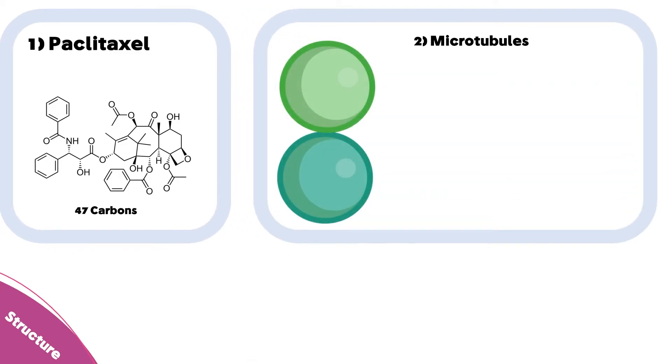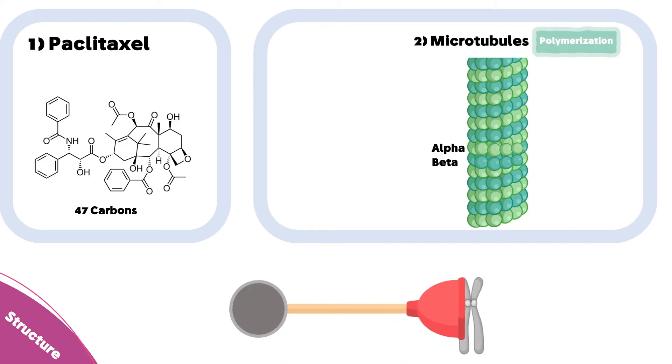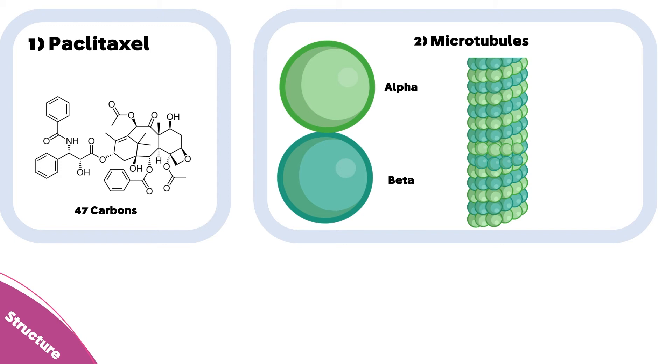Regarding the microtubule structure, a microtubule is composed of two subunits: alpha and beta. They assemble as shown, layer by layer, in a process called microtubule polymerization, by which they can push the chromosomes.